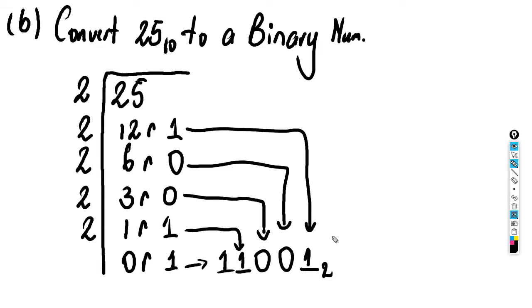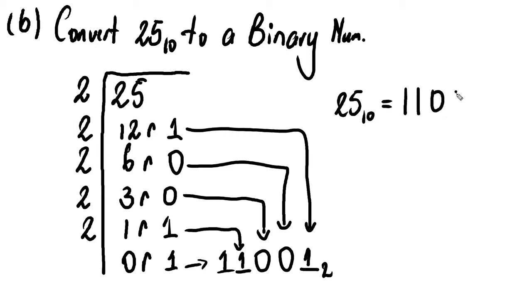So we're going to write this out — reading from the bottom up we get one, one, zero, zero, one. That means that 25 to the base 10 is equal to 11001 to the base two. Pretty easy guys, let's look at another example — it's always good to do three examples.